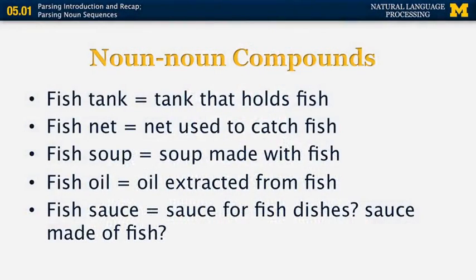The first specific problem is parsing noun sequences. In English, a noun can often modify another noun. For example, a 'fish tank' is a kind of tank that holds fish. But a 'fish net' is a net used to catch fish, 'fish soup' is soup made with fish, and 'fish oil' is oil extracted from fish. Even though these four noun phrases have a very similar structure superficially, they have very different interpretations.